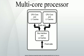Manufacturers typically integrate the cores onto a single integrated circuit die, or onto multiple dies in a single chip package. Processors were originally developed with only one core. Multicore processors were developed in the early 2000s by Intel, AMD, and others.